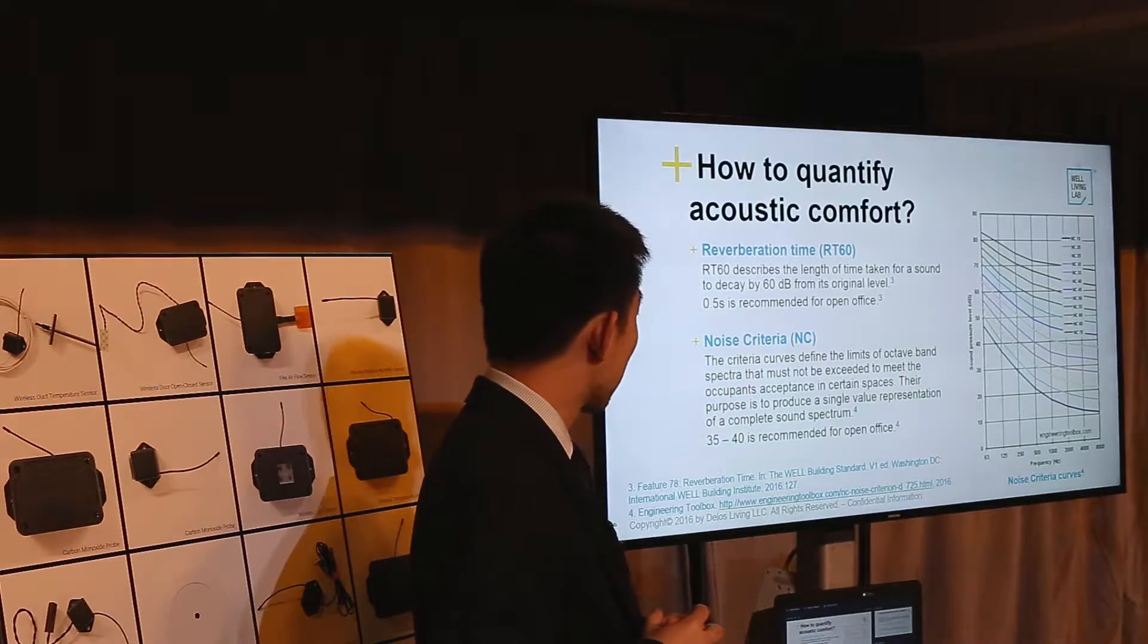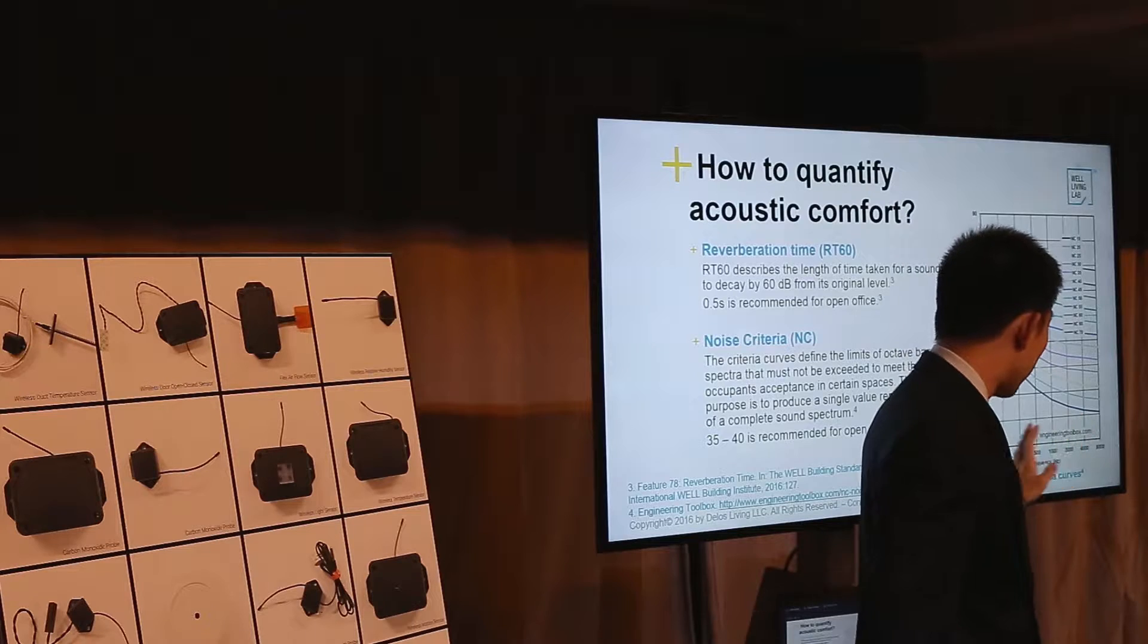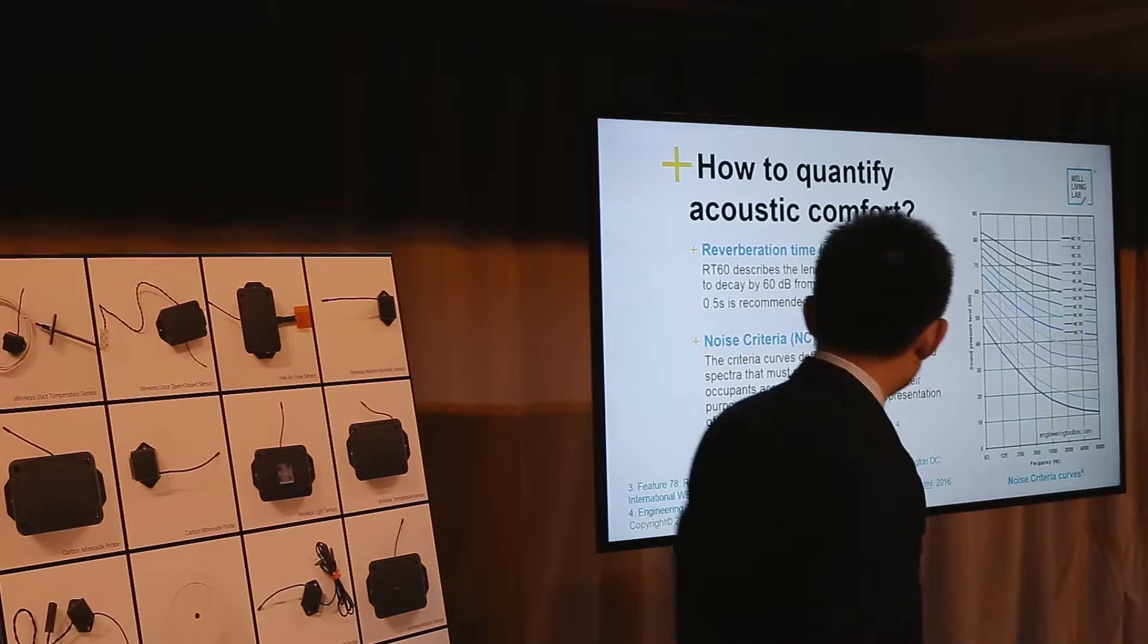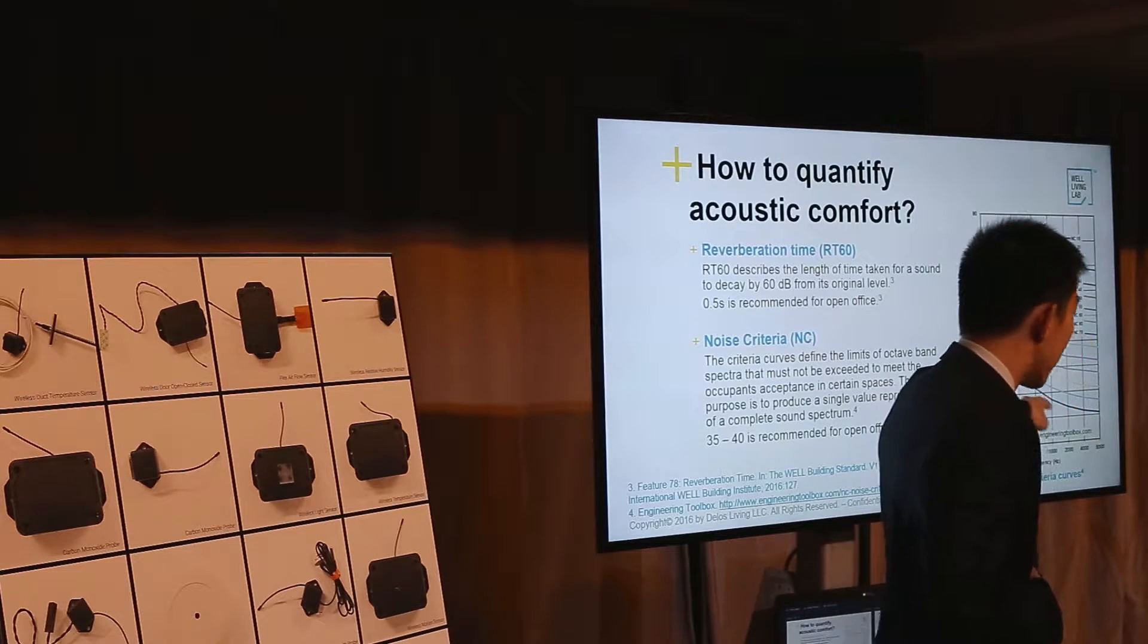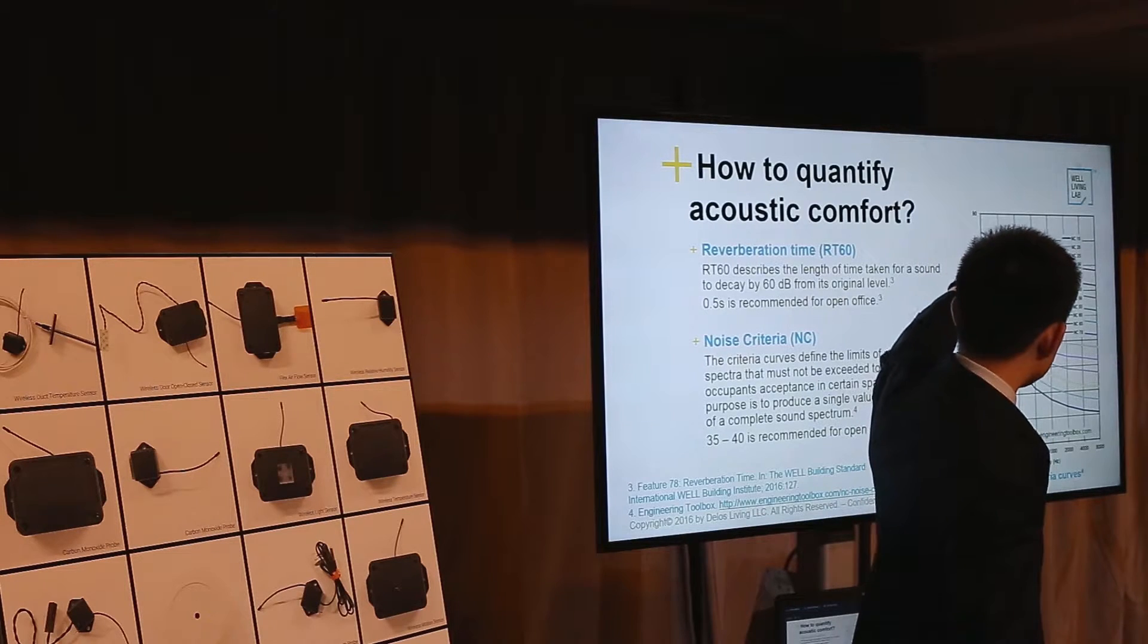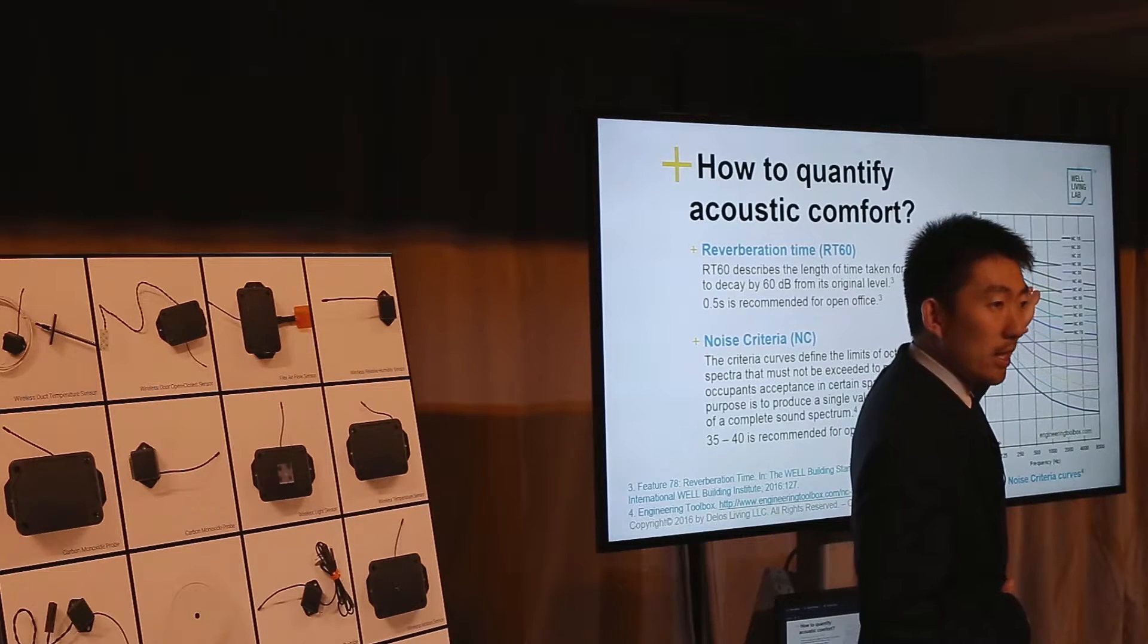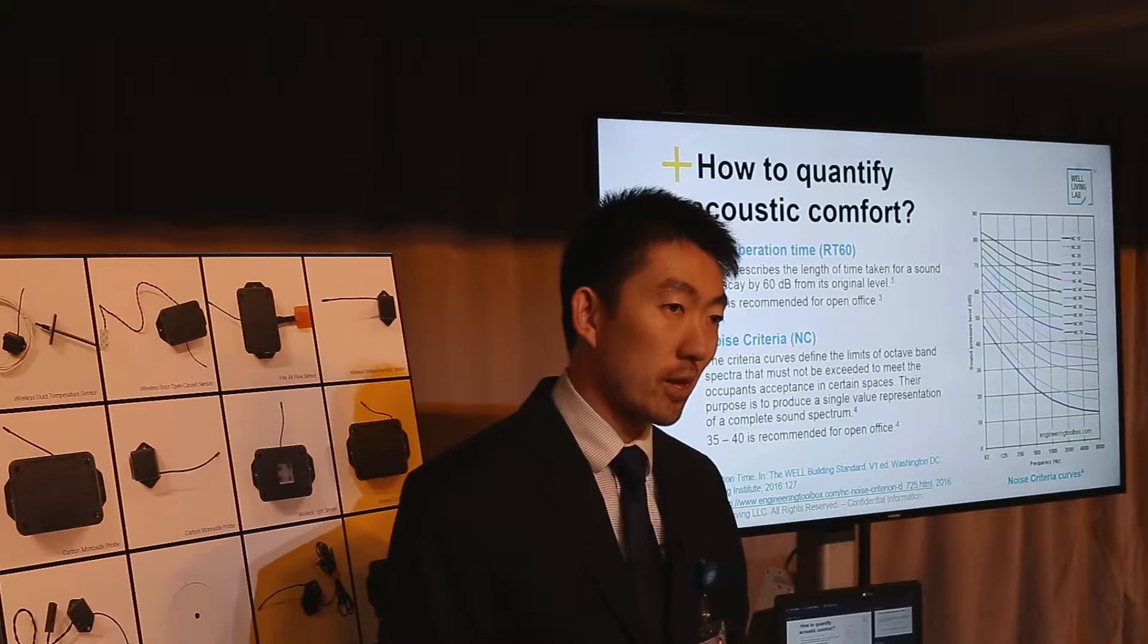The second one is noise criteria. Basically, it's a set of curves over different frequencies and you measure different frequencies of the sound and see where your room curve falls in. NC means noise criteria. If even one out of five or seven frequencies is above one line, it will have to go up to one level. Typically, 35 to 40 NC is recommended for open office.